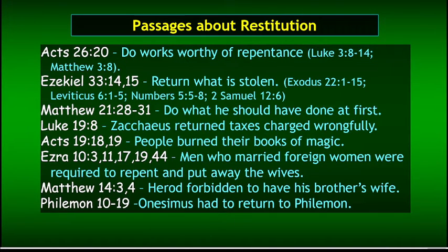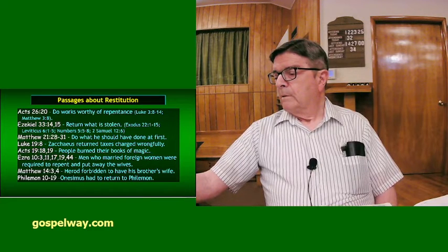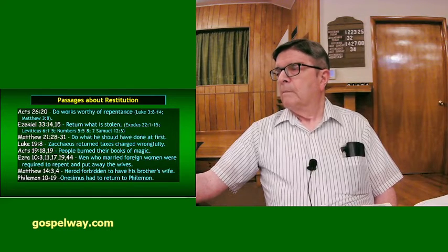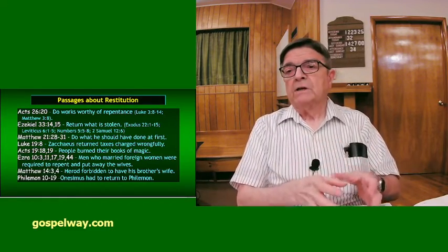Rick: Verse 18 says if he has wronged you or owes anything, put that on my account. So this passage in Philemon illustrates the point — even though Onesimus had become a Christian, that didn't wipe out his past debt. If you had a debt before, it's still a debt which has to be paid. Becoming a Christian also doesn't wipe out other scriptures that bear on relationships — other scriptures that say you can only be divorced for fornication still apply. We have to consider all passages, not just one passage and throw out all the others.